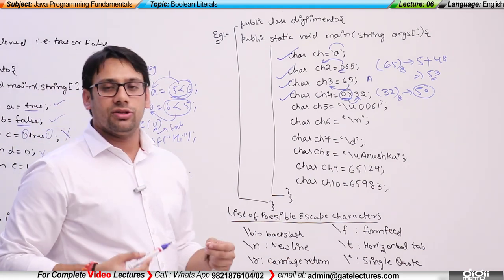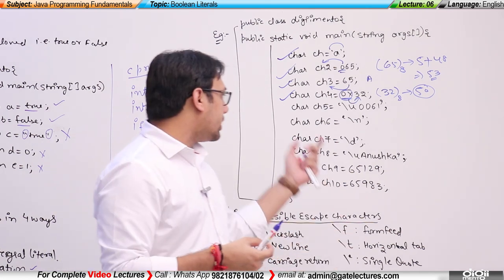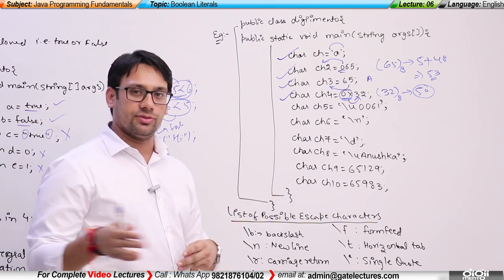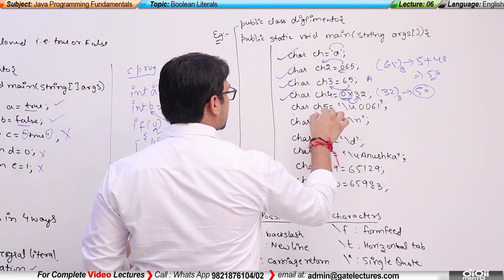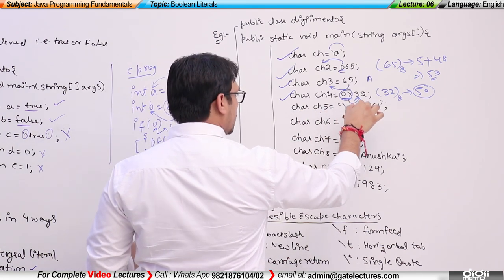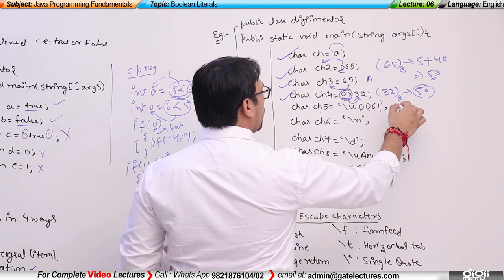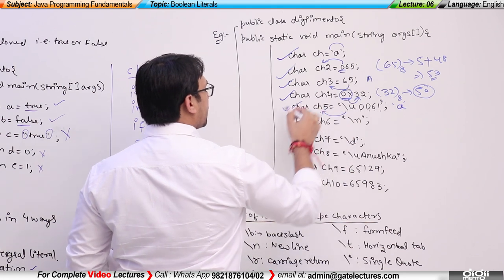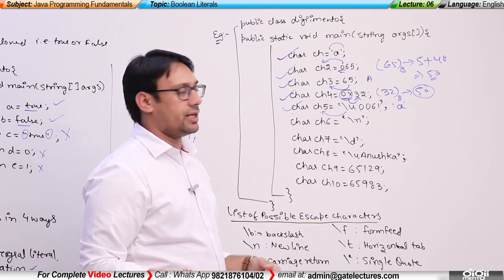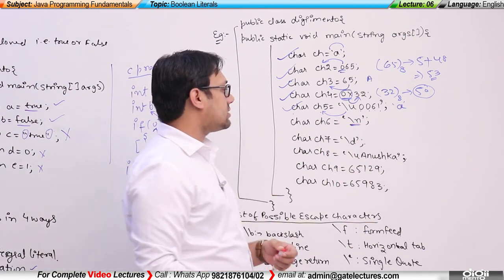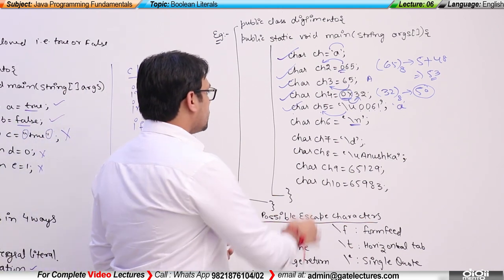Whenever you study from these videos, just try and execute those programs — that way you will get some experience. If I write char ch5 is equal to \u0061, this is a Unicode representation for small a, so small a will be stored in ch5 and this is correct. Char ch6 is equal to \n — \n is an escape character — so we can also store an escape character in a char variable, and this is correct.